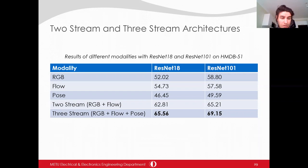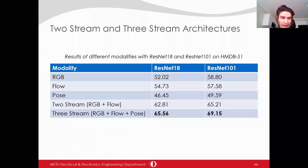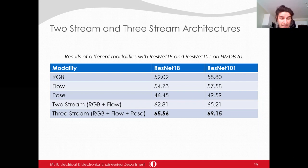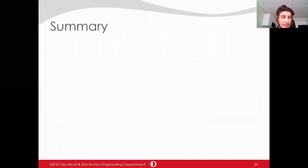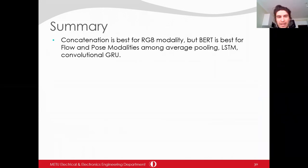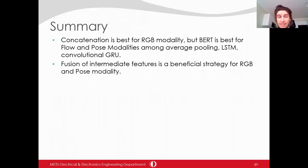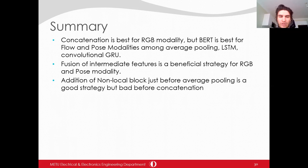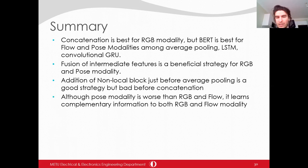The results of all modalities, two-stream and 3D stream architectures are shown for ResNet-18 and ResNet-101. From two-stream results, RGB and flow streams learn complementary information to each other. Additional pose information further improves two-stream performance — there is a 3% improvement in ResNet-18 and 4% in ResNet-101. As a summary: concatenation is best for RGB modality, BERT is best for flow and pose modalities among average pooling, LSTM, and convolutional GRU. Fusion of intermediate features is beneficial for RGB and pose. Adding a non-local block just before average pooling is a good strategy but bad before concatenation. Although pose modality is weaker than RGB and flow, it learns complementary information to both.